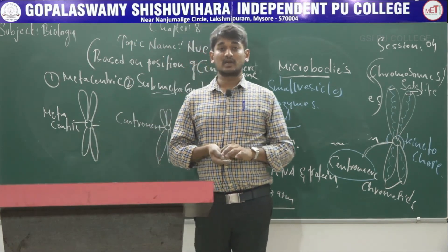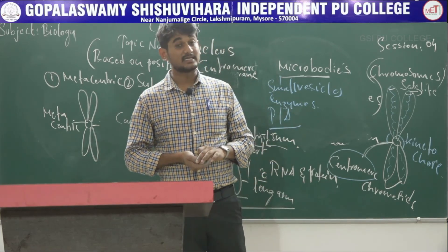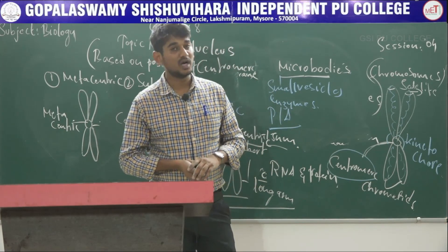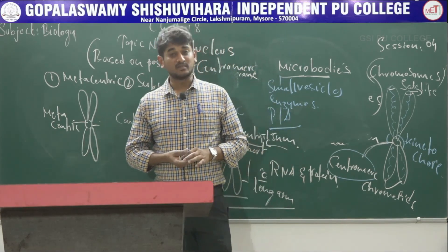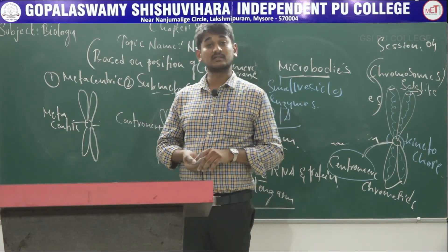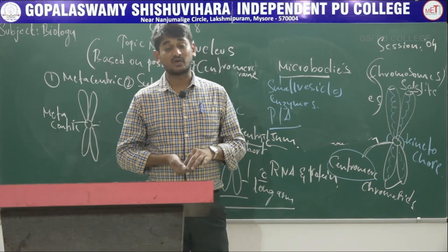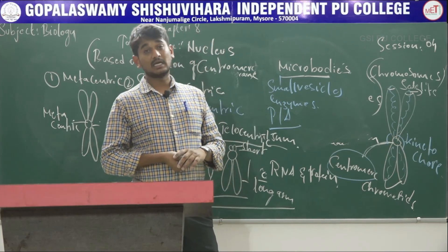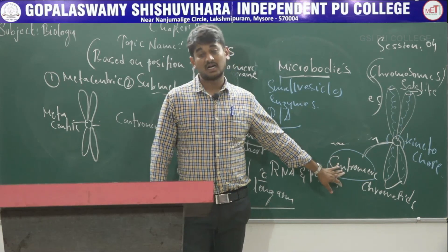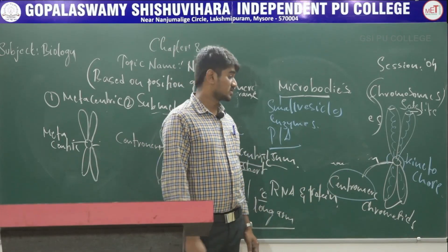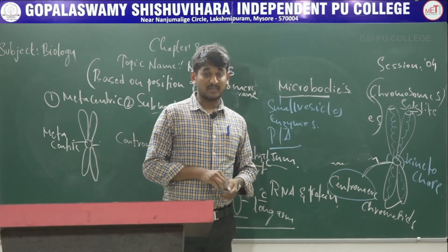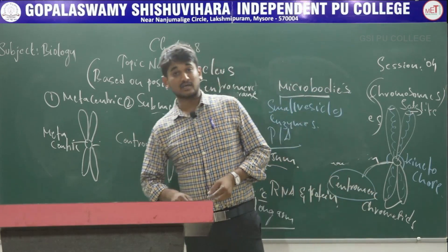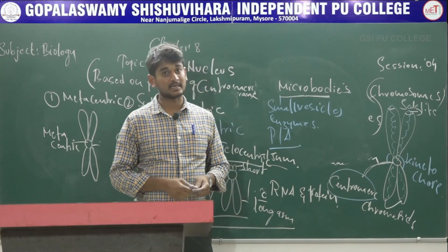The nucleus is the membrane-bound organelle. The nucleolus is the active site for ribosomal RNA and proteins. During cell division, the chromatin thread condenses to form chromosomes. Each chromosome has a primary constriction called the centromere, and the centromere is covered by a disc-shaped protein structure called the kinetochore. Based on the position of the centromere, chromosomes are classified into four types. Microbodies contain enzymes.